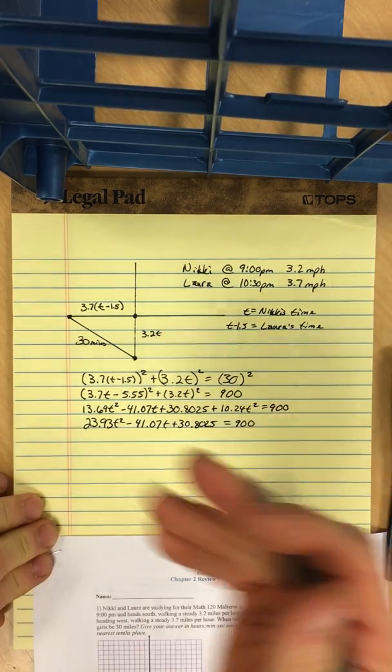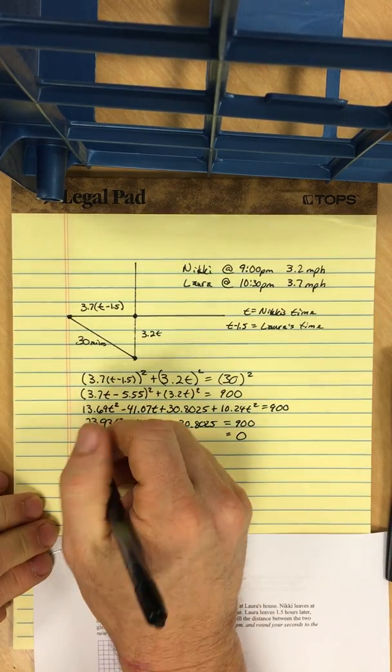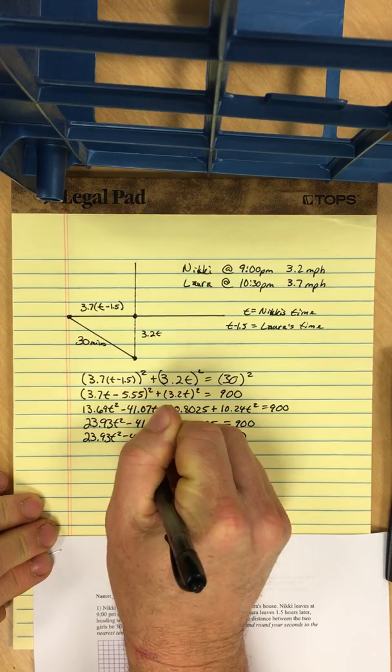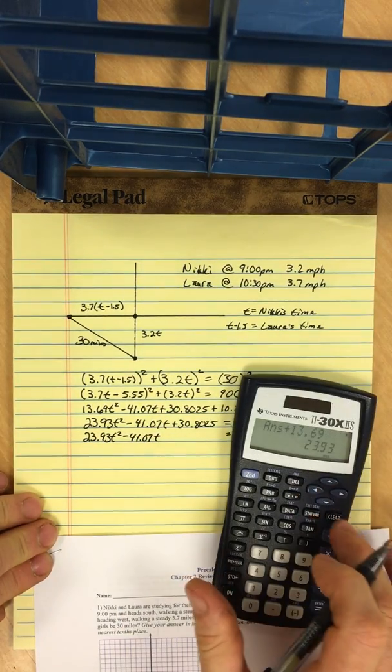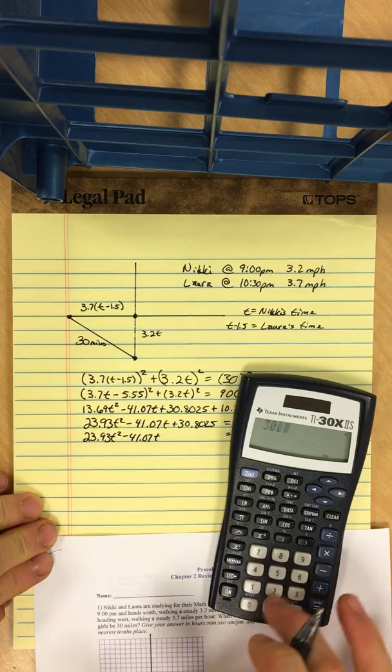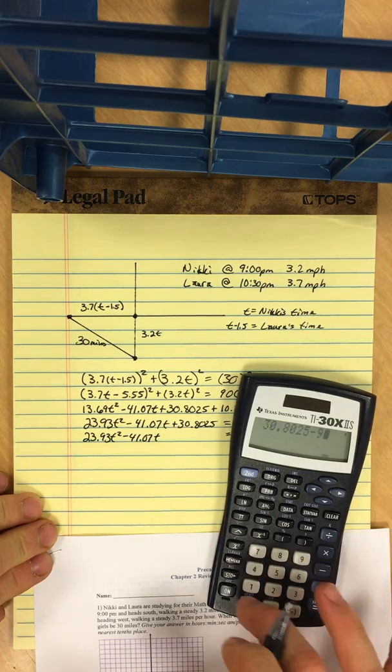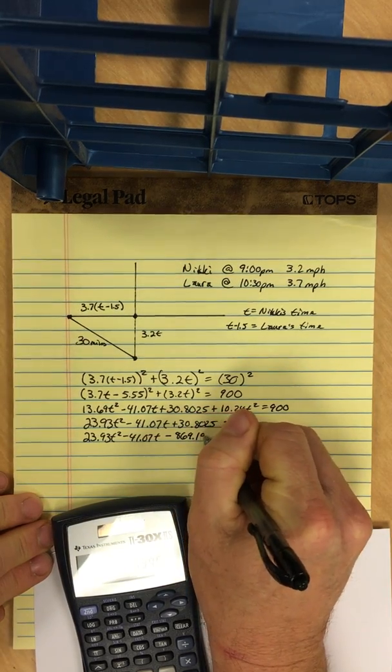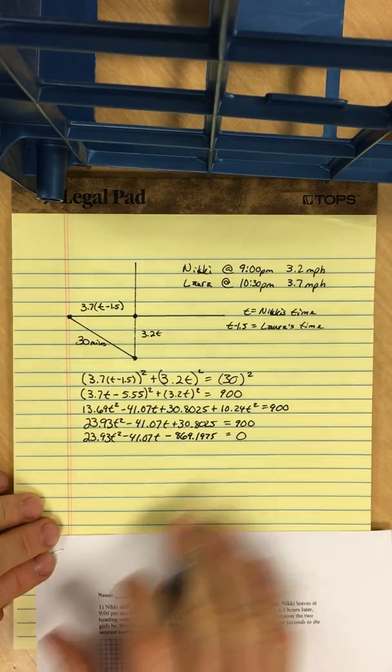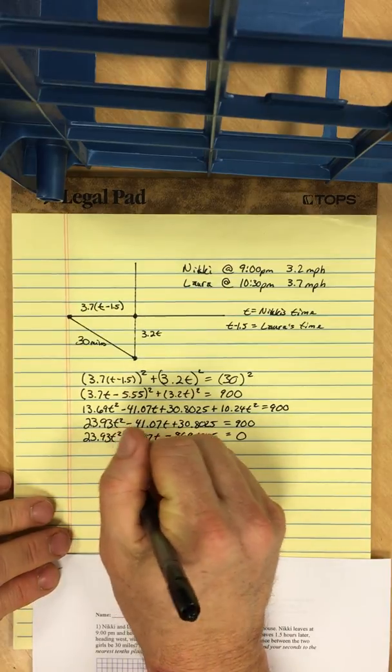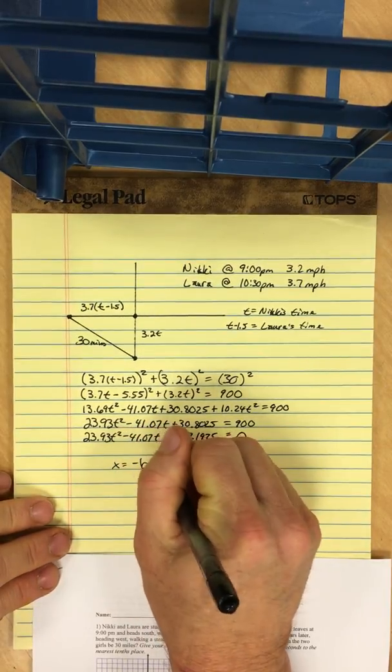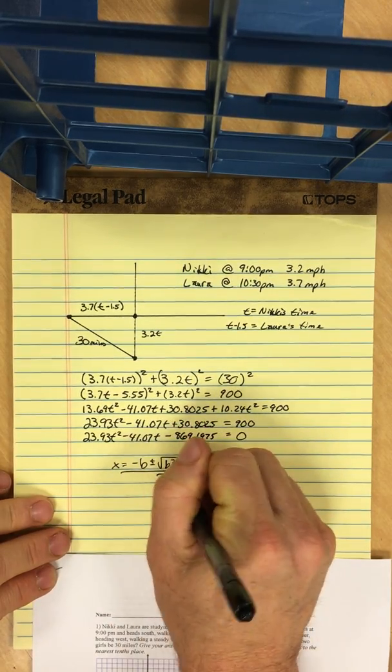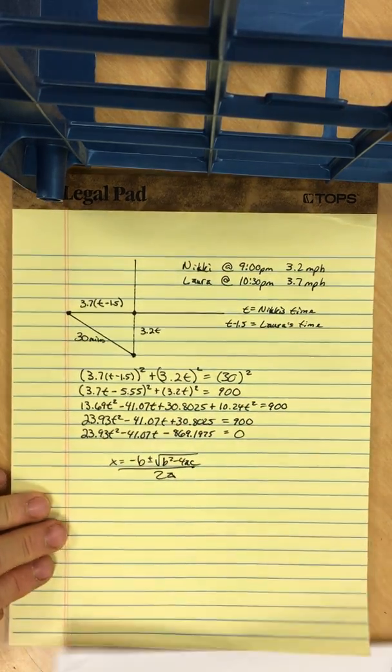Let's do a clean up step. So we got 10.24 plus 13.69, and that's 23.93t squared minus 41.07t plus 30.8025 equals 900. We got a quadratic. Let's get a zero on the right-hand side, and I think we have to use the quadratic formula here.